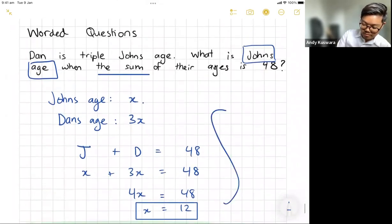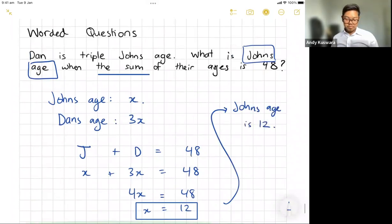There's dividing both sides by 4, and then from there, it's nice, you can answer the question. John's age is 12, that's it. So when John is 12, triple that will be 36, so Dan will be 36, and the sum of the ages will be 48.